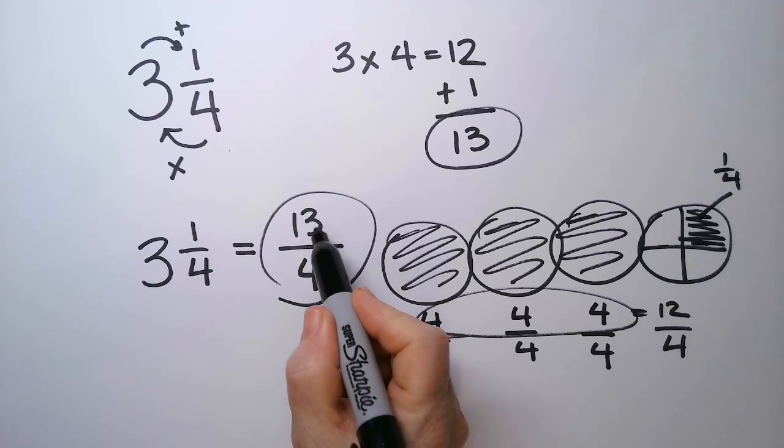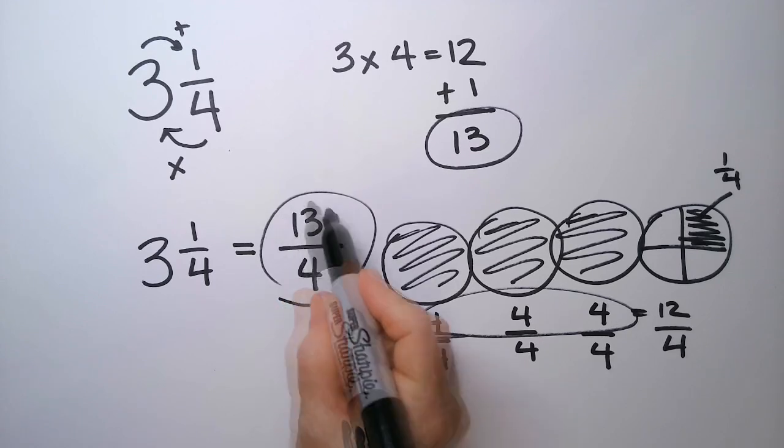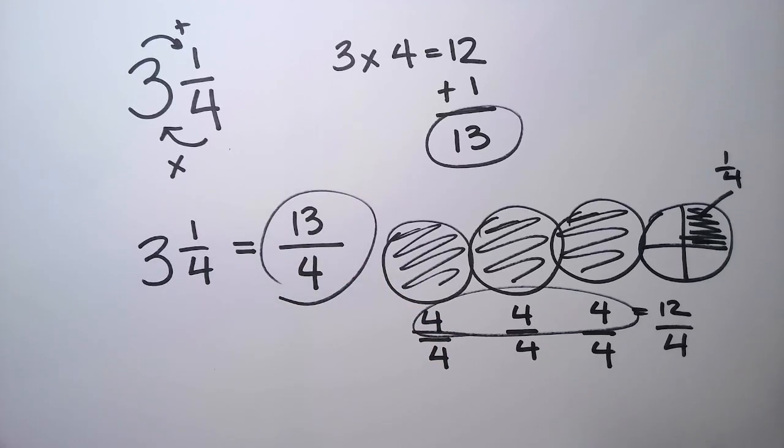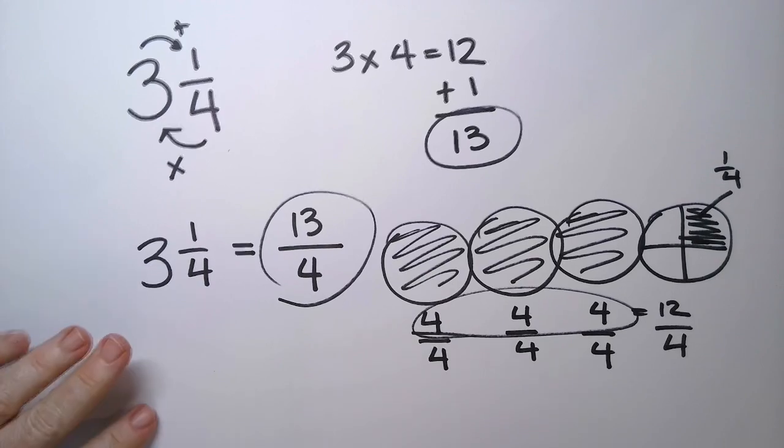Improper fraction just means that the numerator is a larger number than the one in the bottom, the denominator. Let's try another one.